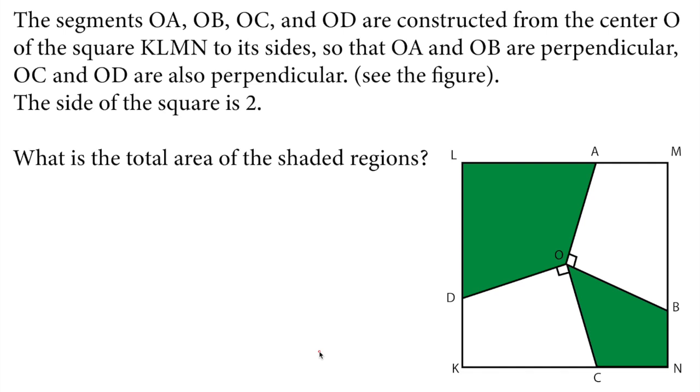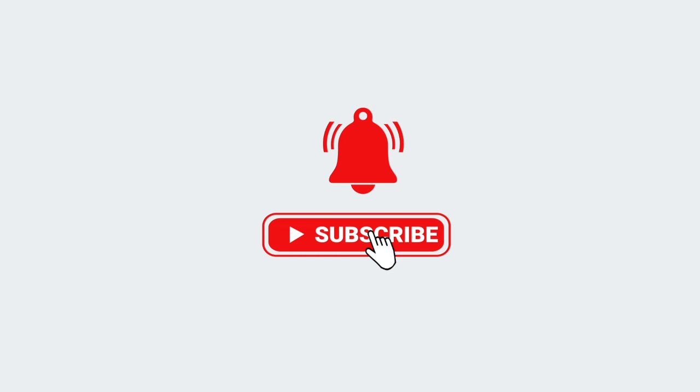OC and OD are also perpendicular. The side of the square is 2. What is the total area of the shaded regions? Please don't forget to subscribe to our channel.